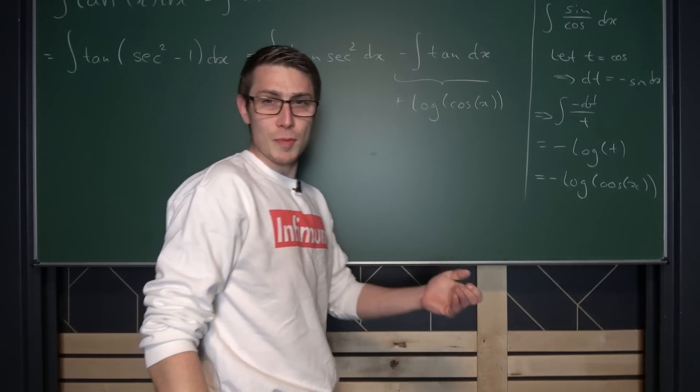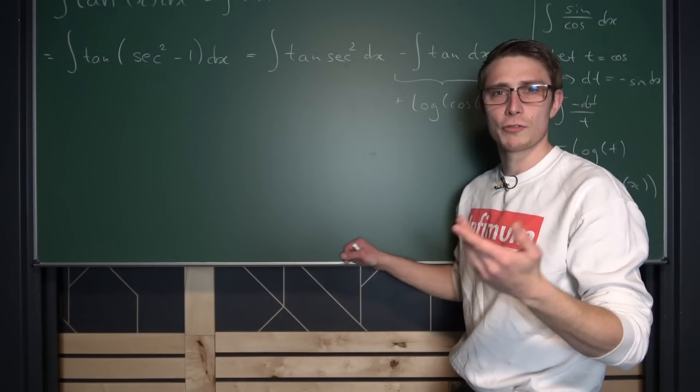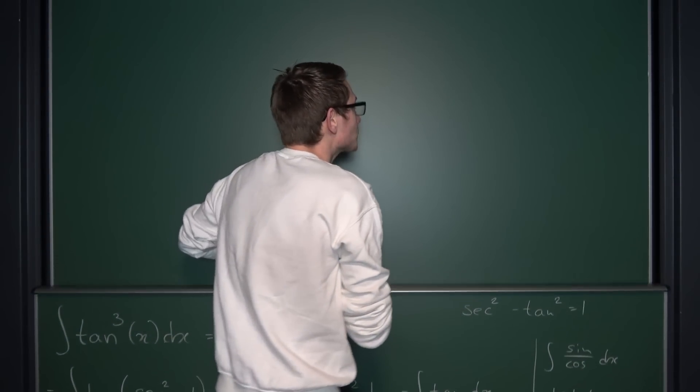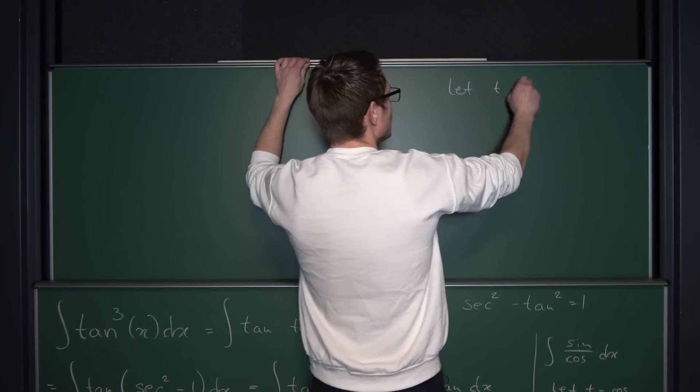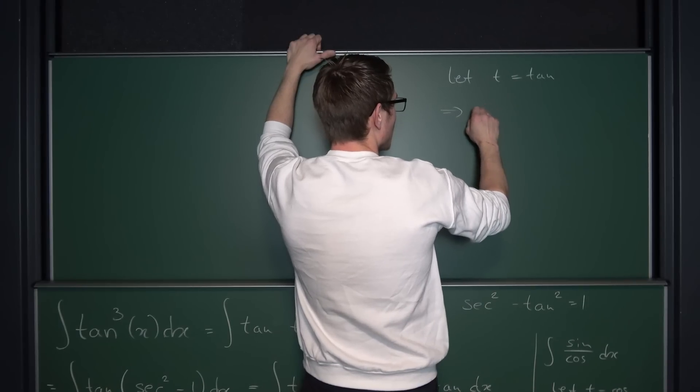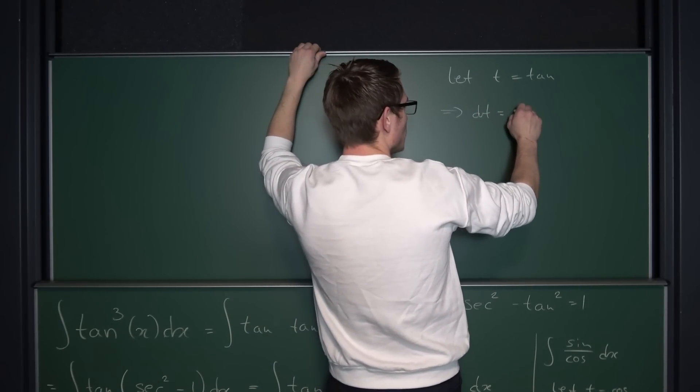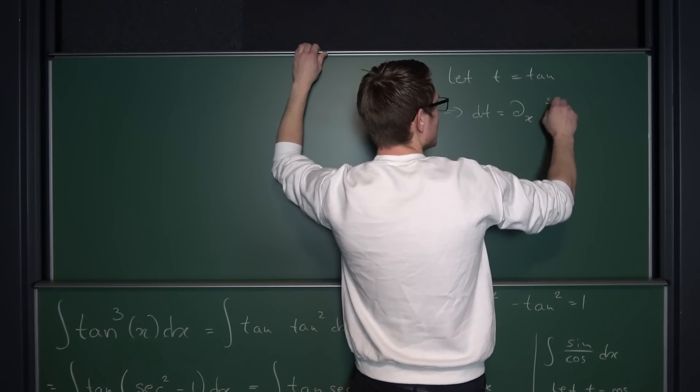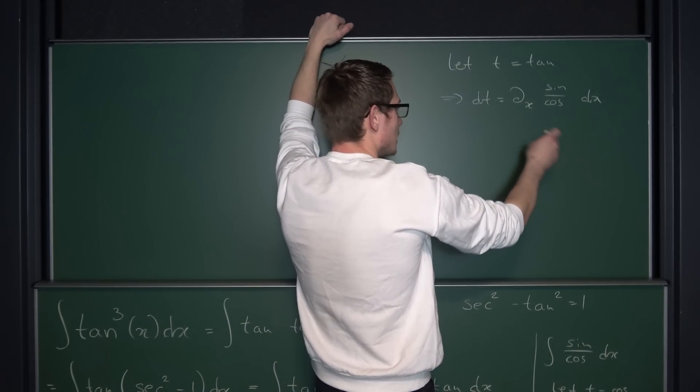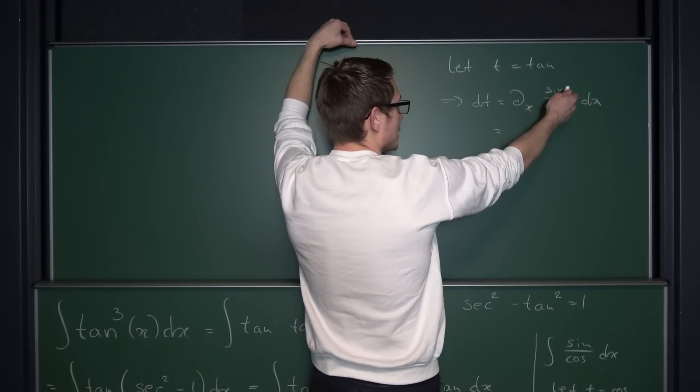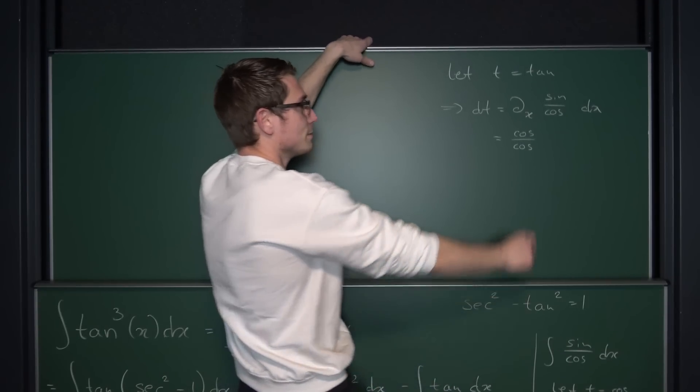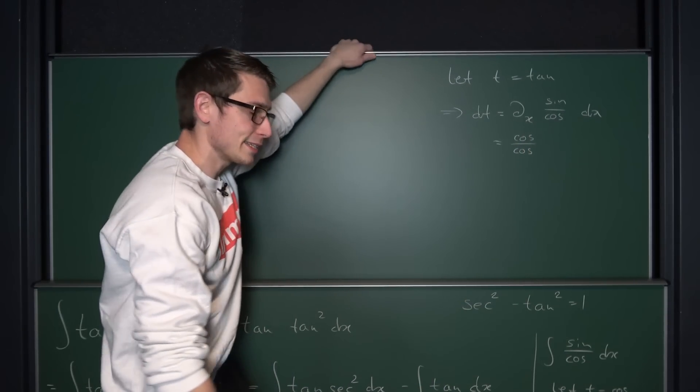Now, I mentioned before that the differential of the tangent has something to do with the secant squared in some kind of way. So why not introduce u substitution here? So we are going to say, let t be equal to the tangent of x. Now, if we were to differentiate both sides implicitly, we are going to get that the differential dt is nothing other than, well, the differential in x of, well, the sine divided by the cosine and the differential in x here. So if you were to differentiate this, what we are going to get is just the regular product and chain rule.